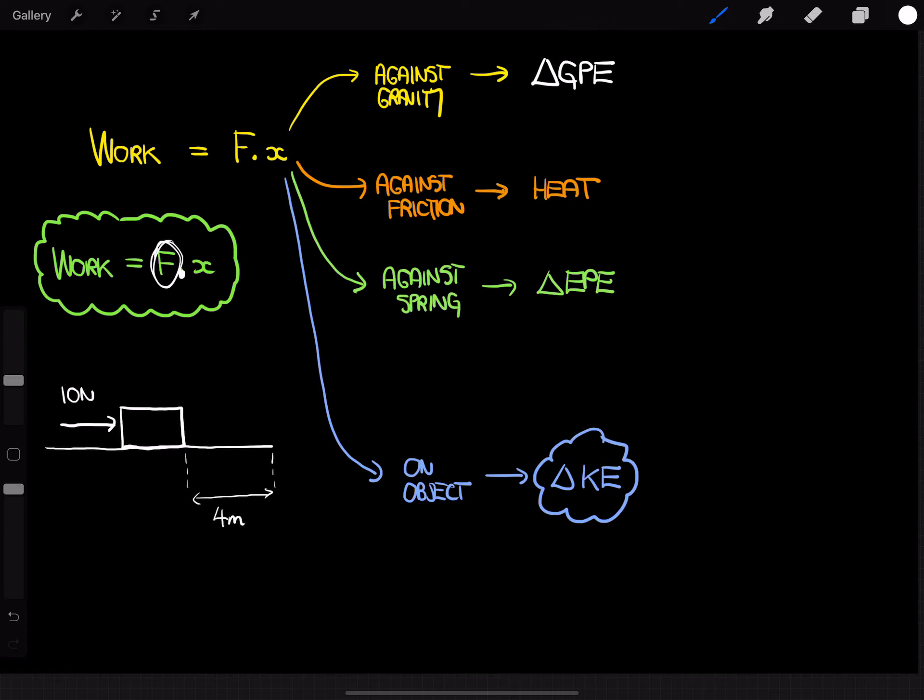Then the work done on this box is going to equal F times x, which is going to be 10 times 4, which is 40 joules. So 40 joules of work has been done on this box.